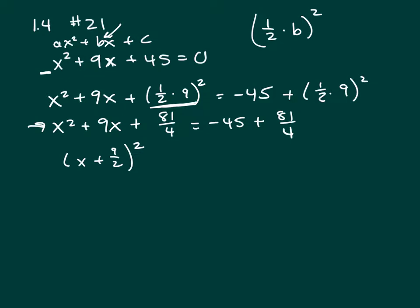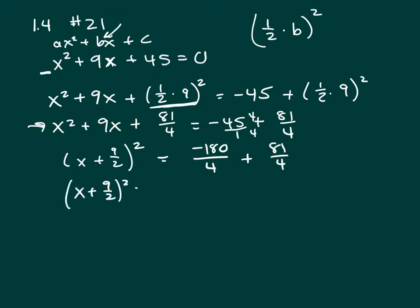On the right-hand side, I've got to get a common denominator, and my common denominator is going to be 4. So 45 over 1 needs a top and bottom of 4, giving negative 180 over 4. Negative 180 plus 81 is negative 99. So this is x plus 9 halves squared equals negative 99 over 4.